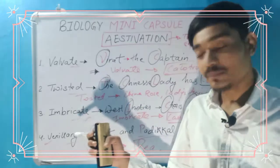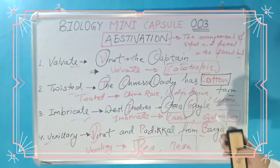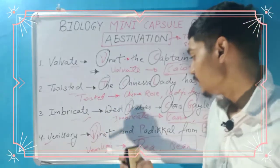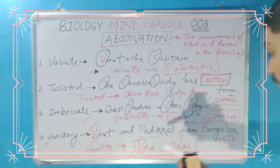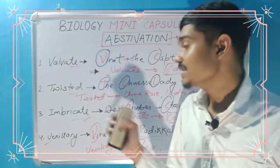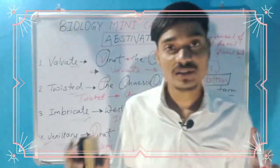So to summarize: Valvate example is Calotropis. Twisted examples are China Rose, Lady's finger, and Cotton. Imbricate examples are Cassia and Gulmohar. Vexillary examples are Bean and Pea. So guys, this is our trick for today.